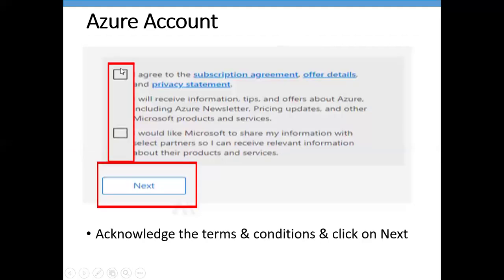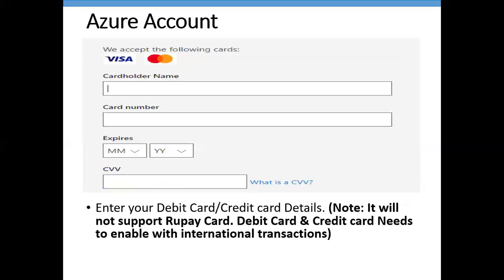Check the terms and conditions checkboxes if you wish, then click Next. Now you need to enter your card details. Note that Azure does not support Rupee cards — it supports Visa and Mastercard only. Enter the cardholder name, card number, expiry date, and CVV.